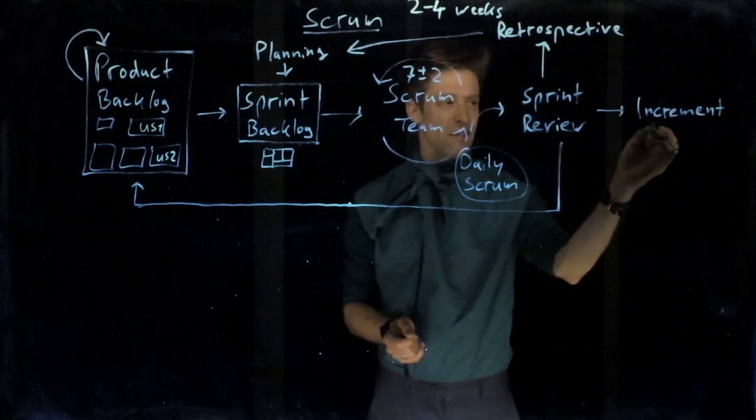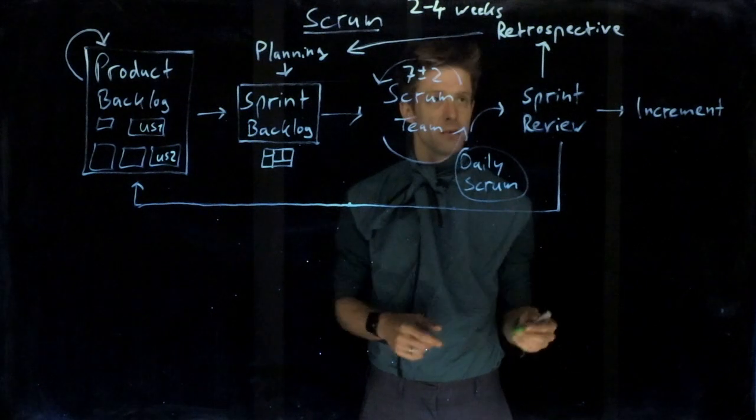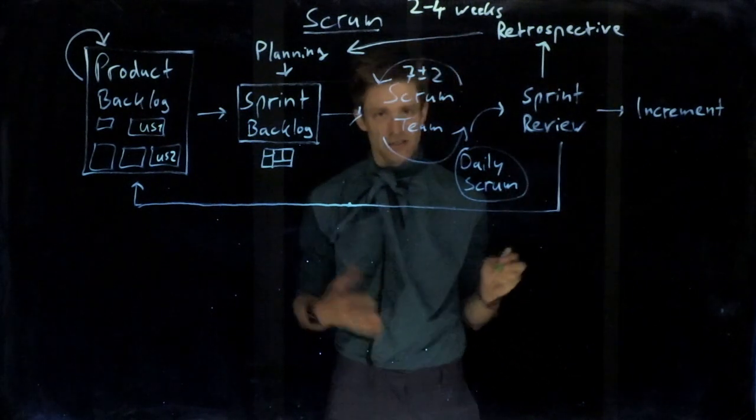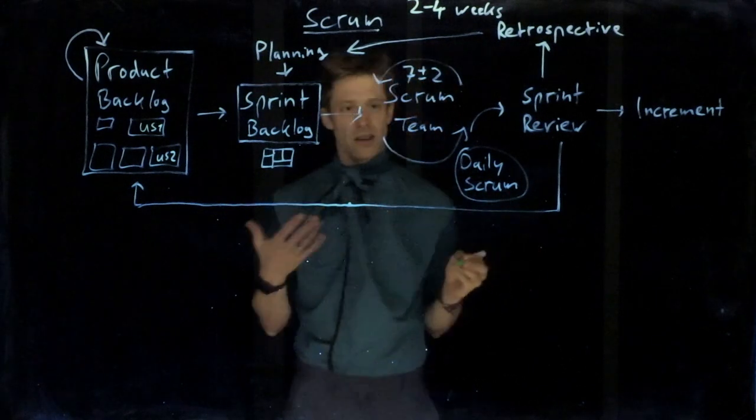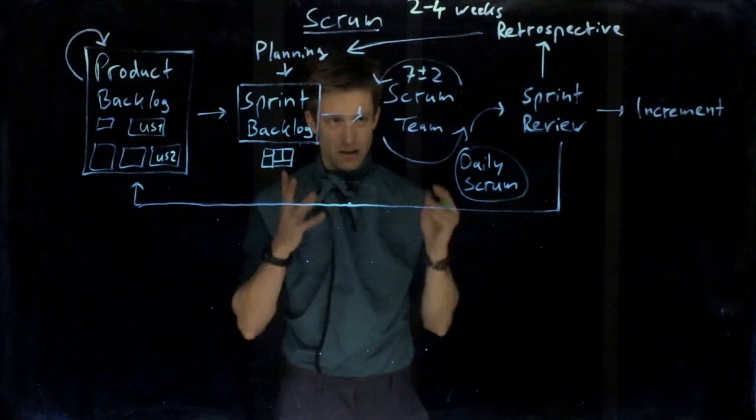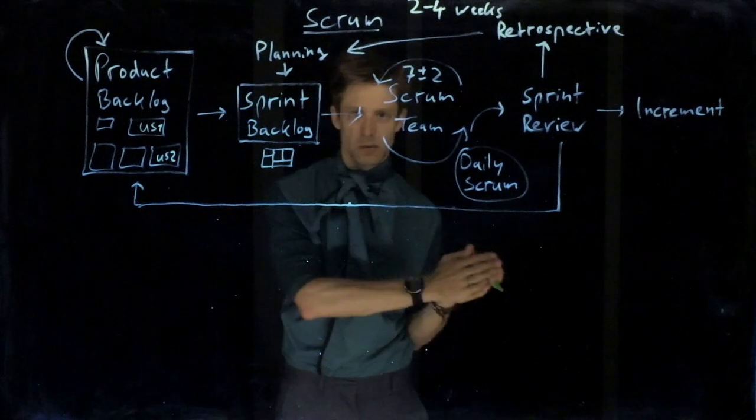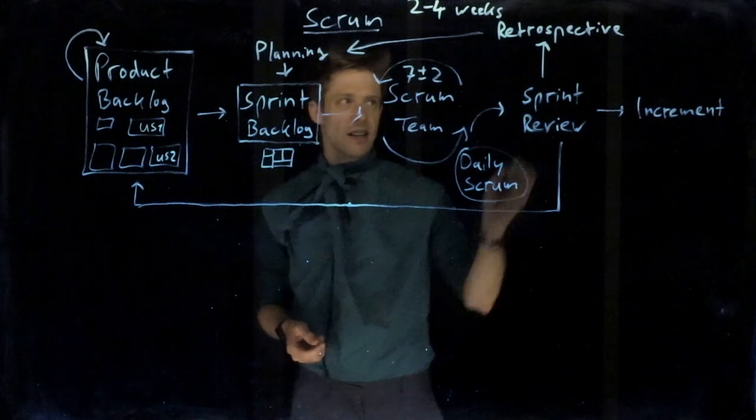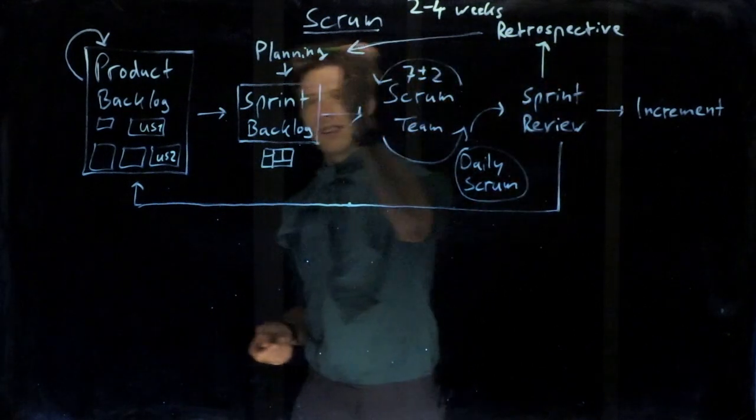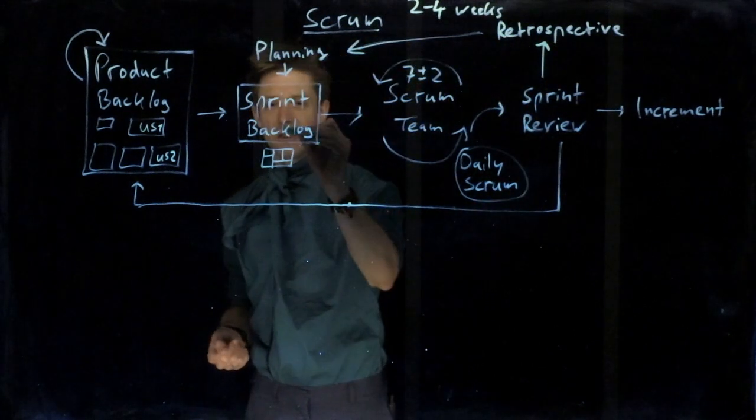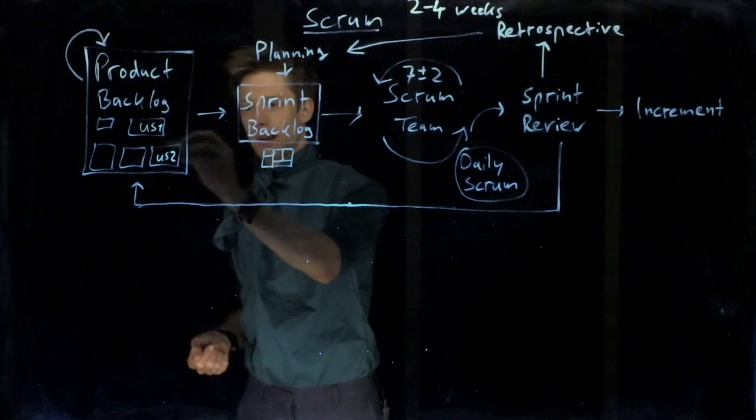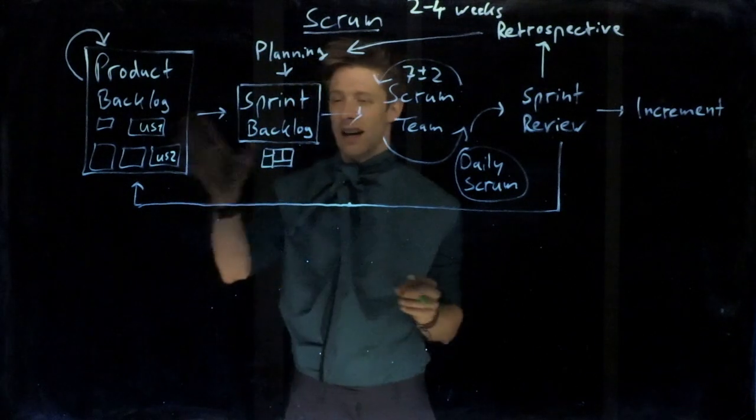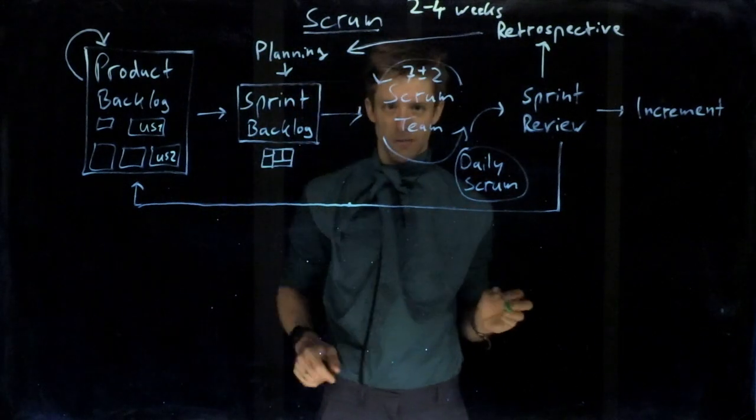Once that is done, you have an increment that you could deploy or just continue working on. Then the team goes on and does a so-called retrospective. They reflect on how did the sprint go. They basically do process improvement. They discuss what went well, what did not go well, what should we be changing in the future. Once they're done with that, they go into sprint planning for the next round. They go back to the product backlog. They choose items that are prioritized, and work on them in the same way as before.